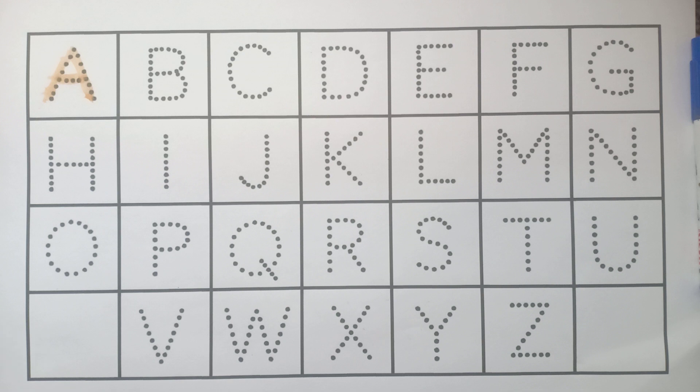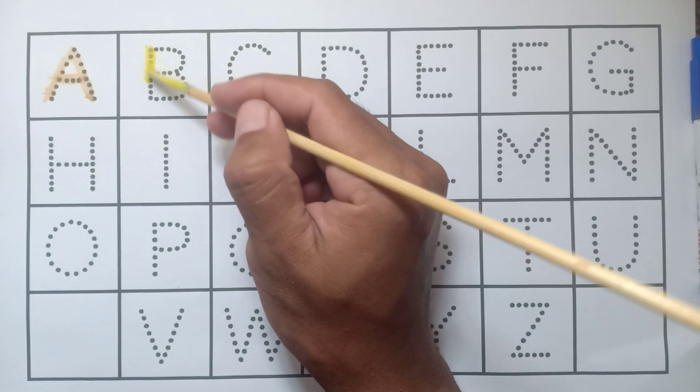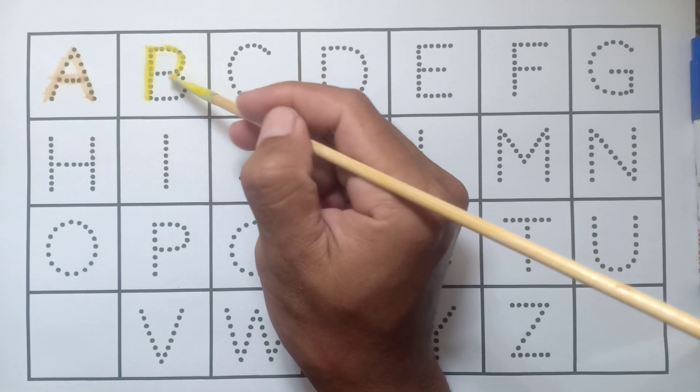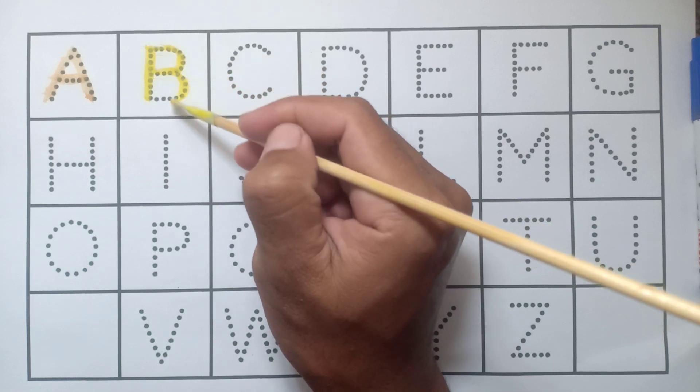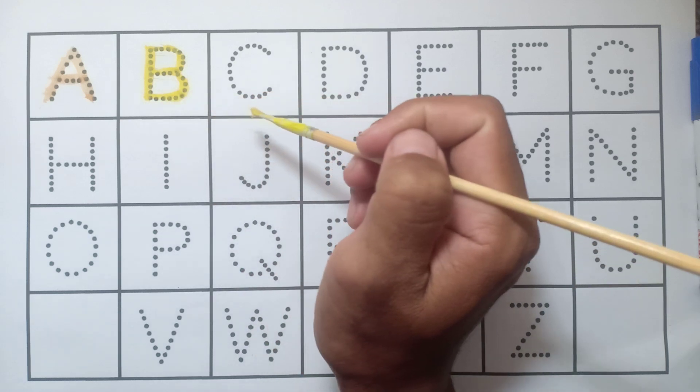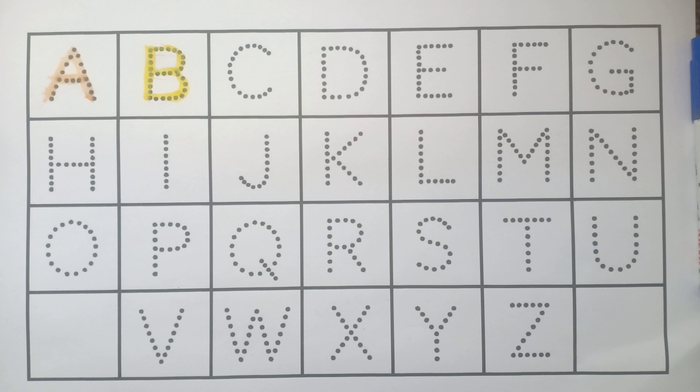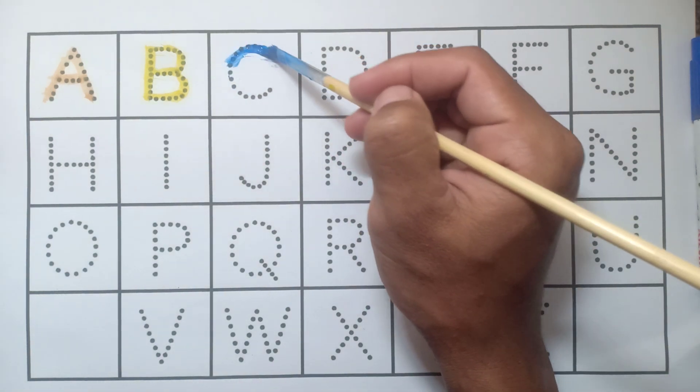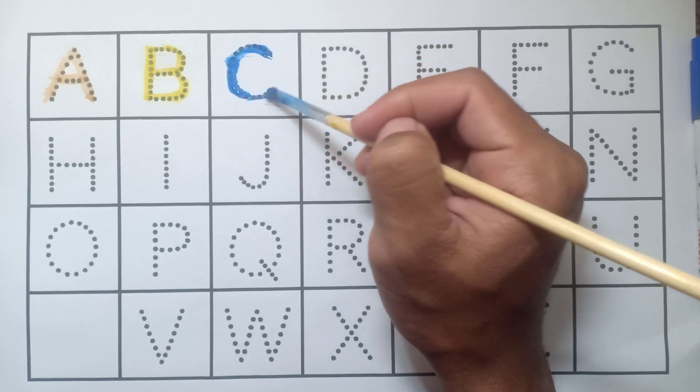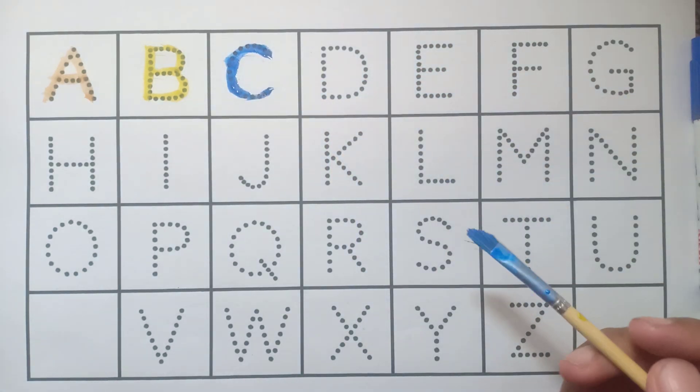A for apple. And B, B for ball, yellow color. And C, C for cat.